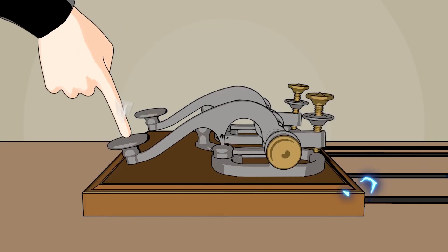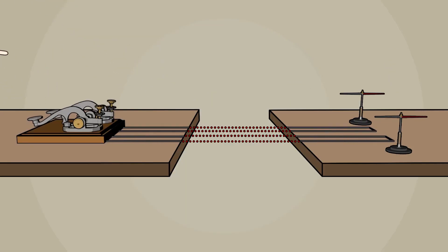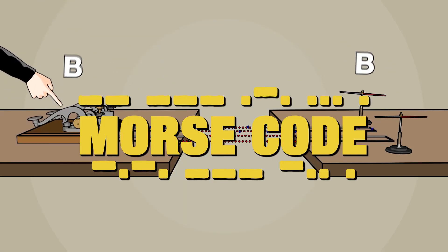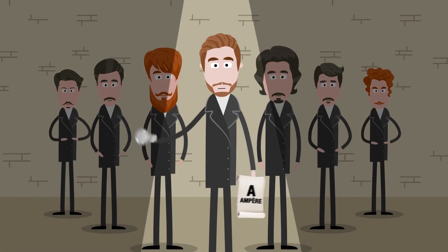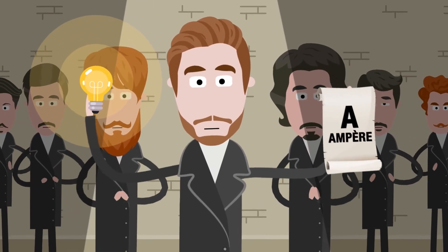André-Marie imagines using this property to build an electric telegraph that will become reality with the invention of the Morse code. In 1881, the Congress of Electricians paid homage to him by naming Ampères the International Current Unit.